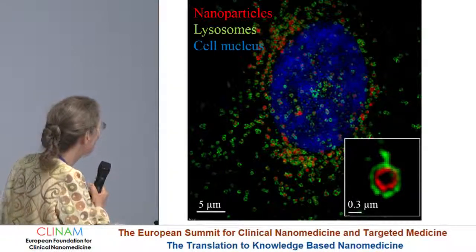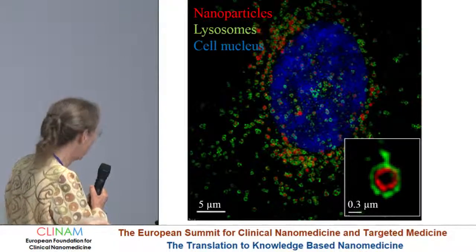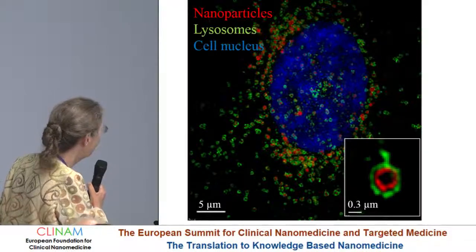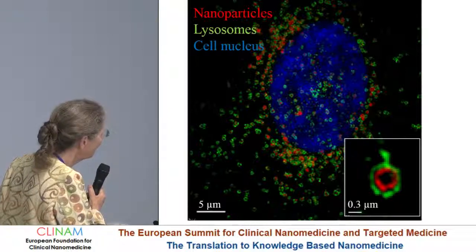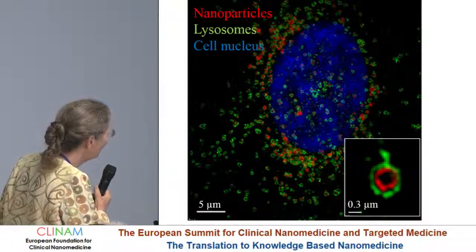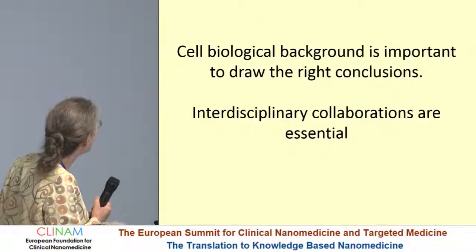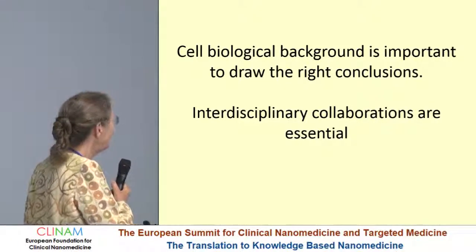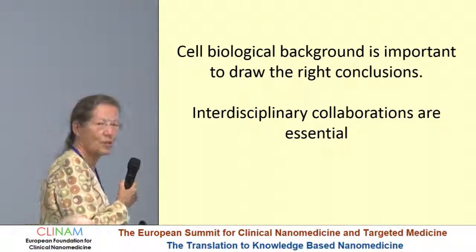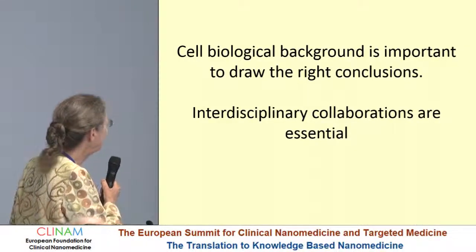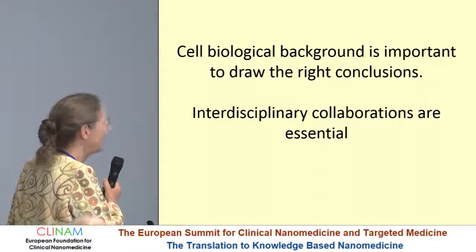One can also get a good idea from super-resolution microscopes. Here you see red nanoparticles, green lysosomes, and the cell nucleus. You can see a single lysosome containing red particles — one pixel here is 40 nanometers, so the resolution really starts to help. We think that cell biological background is important to draw the right conclusions. One can see a lot of strange conclusions published in high-impact journals, and in order to get to the right conclusions, interdisciplinary collaborations are essential these days.